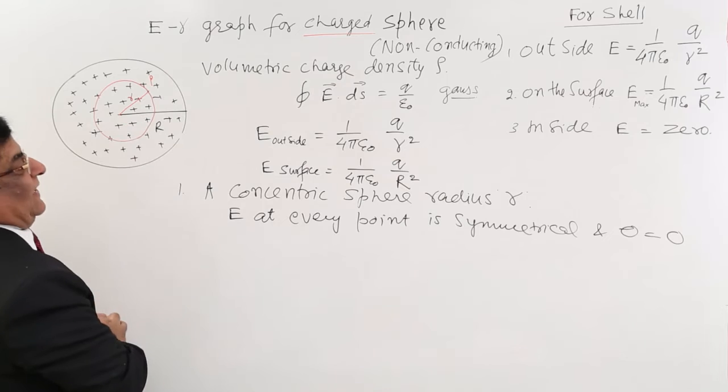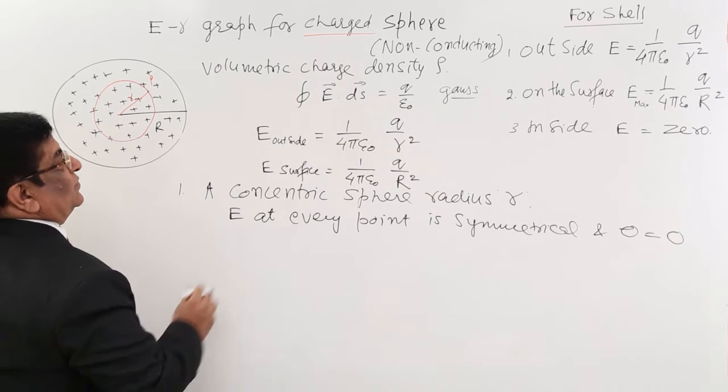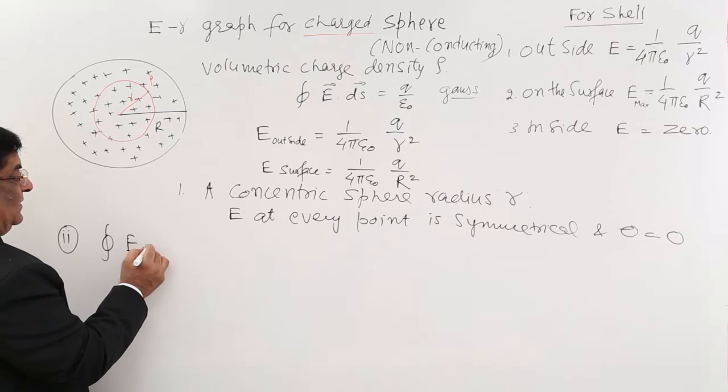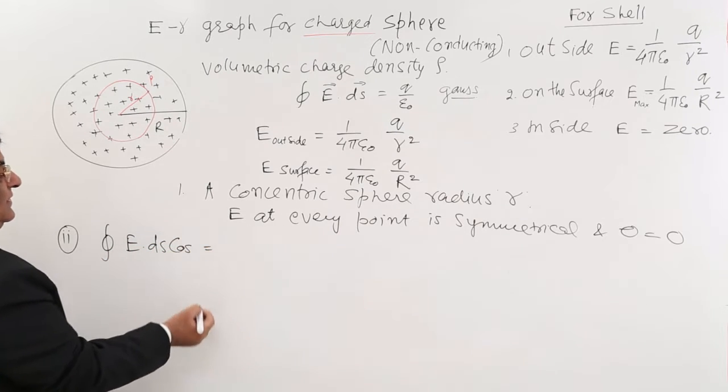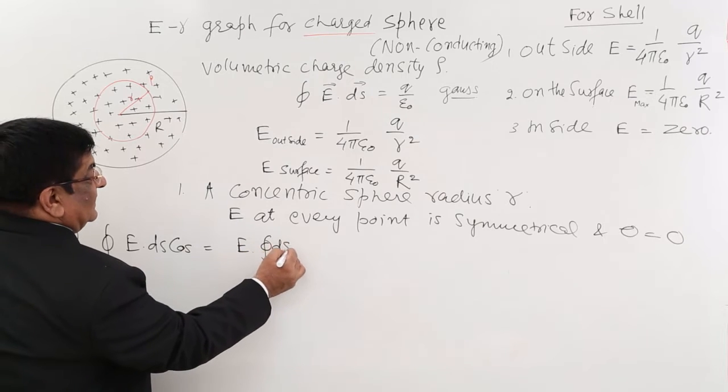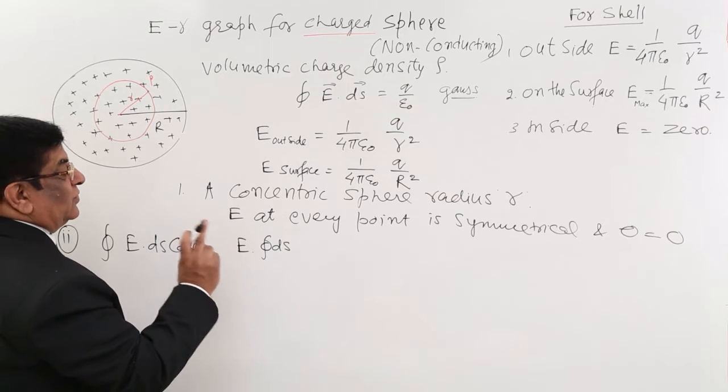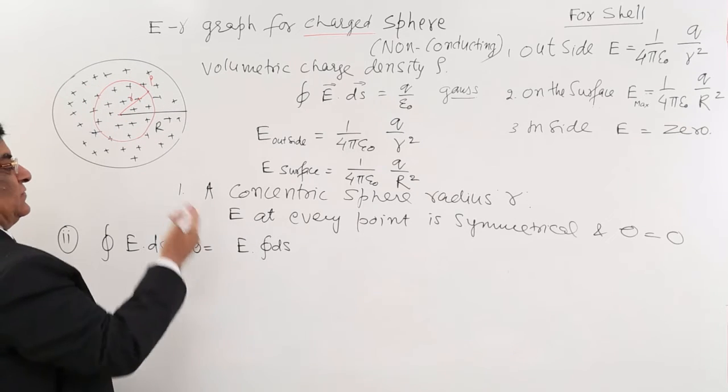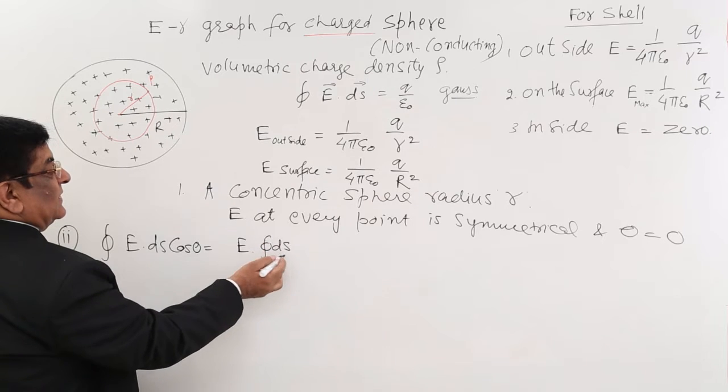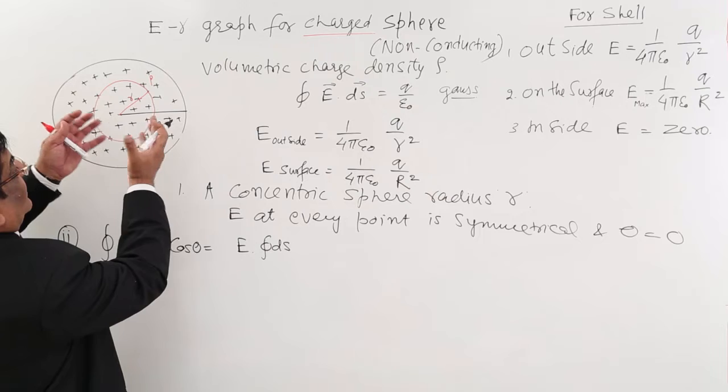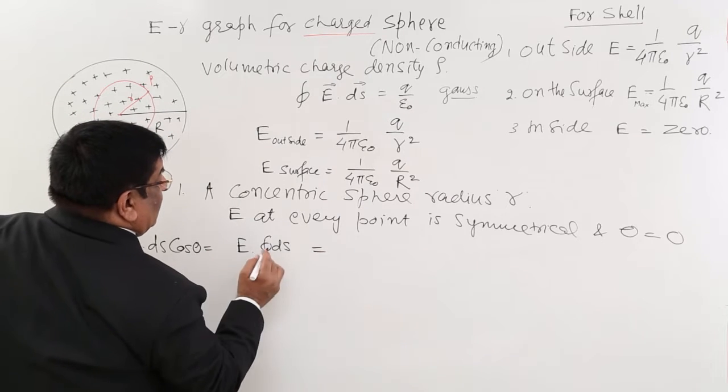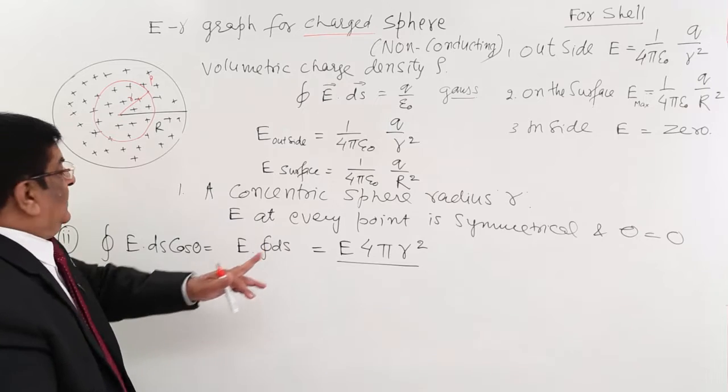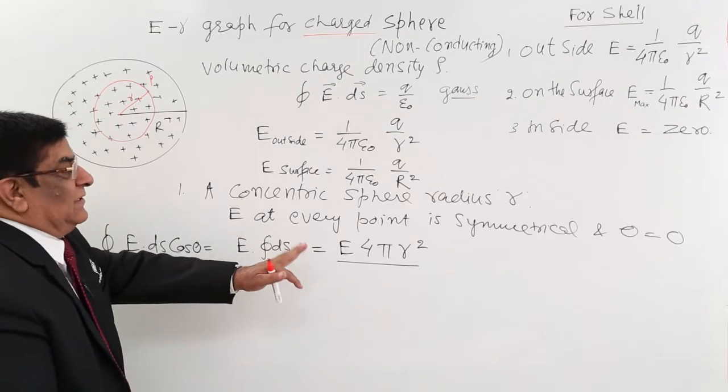Now this is our Gaussian surface, the red one. The next thing we have to take closed integral E ds. Closed integral E ds cos theta is equal to E closed integral of ds and cos theta is equal to cos 0 is equal to 1. Now E is uniform constant because this distance is constant. So that is constant, is taken out and we have to do closed integration of ds area. If all the area is integrated then we get the total area of the sphere and it becomes 4 pi r square. So far so good.